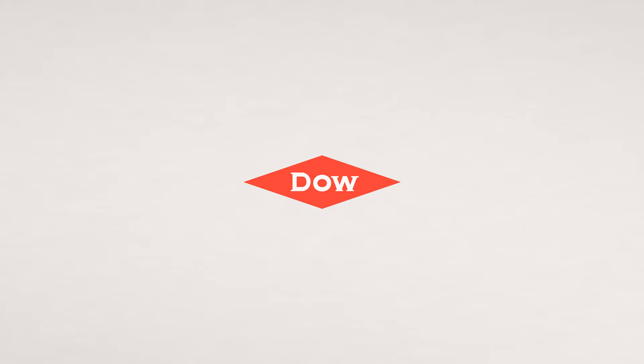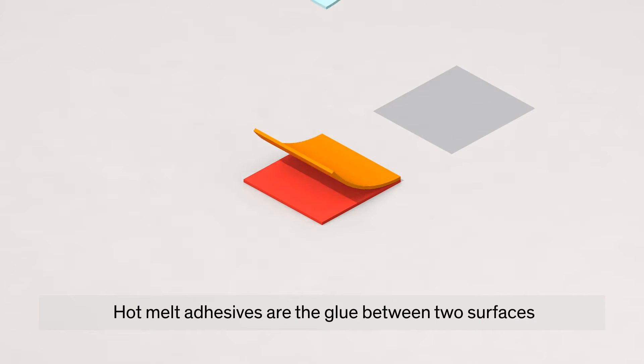What are hot melt adhesives or HMAs? They're simply the glue that lets us bind two surfaces or two separate items together.